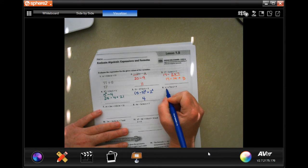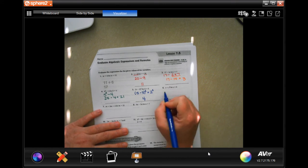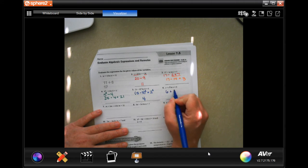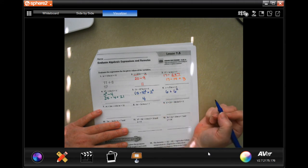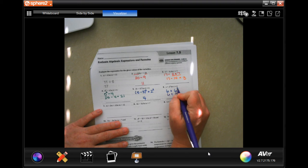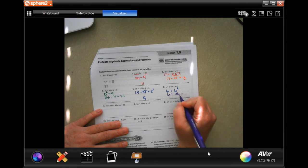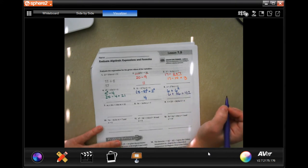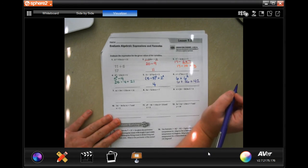This one says X plus X squared, where X equals 6. So I have 6 plus 6 squared. Well, I have to do the exponents first. So it's going to be 6 plus 36 because 6 times 6 is 36. That is not 6 times 2. That is 6 times 6. Well, 6 plus 36 is 42.